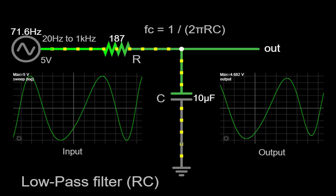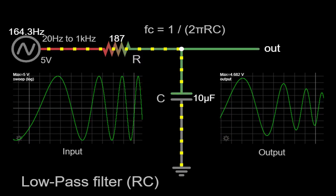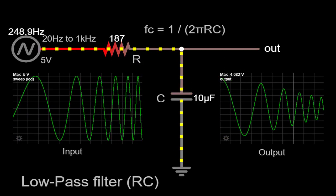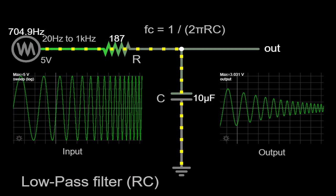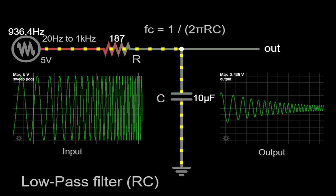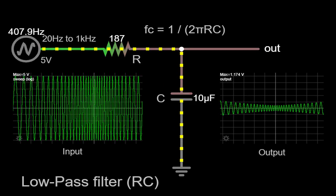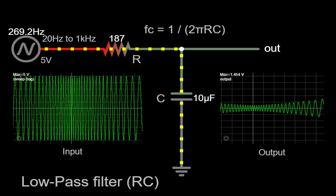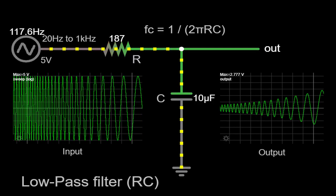In conclusion, the RC low-pass filter is a fundamental circuit that selectively allows lower frequency components to pass while diminishing the presence of higher frequency components. Its ability to shape and control signal frequencies finds broad application in a variety of fields. Throughout this video, we've explored the circuit, observed its behavior through a circuit simulator, and discussed the underlying principles.